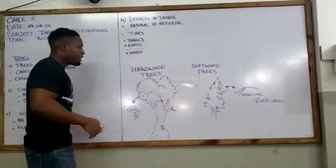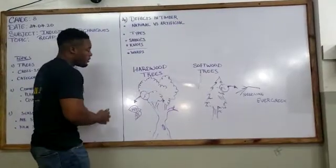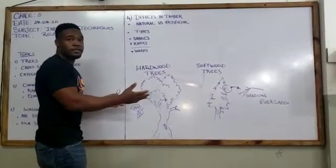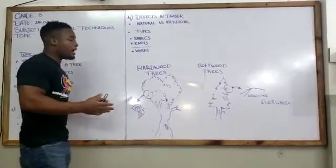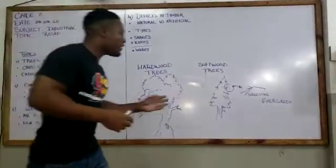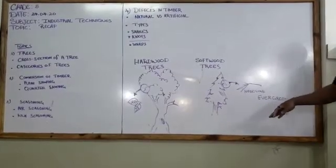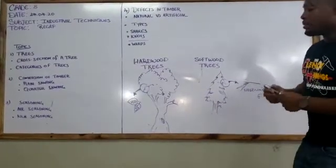We said that hardwood trees, the leaves are broad, and it is deciduous, which means it sheds its leaves, and we said that softwood trees, leaves are thin and needle-like, and they remain evergreen.